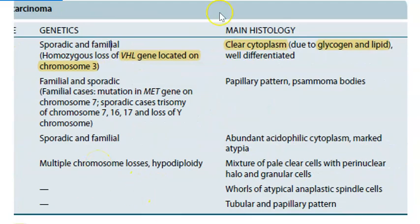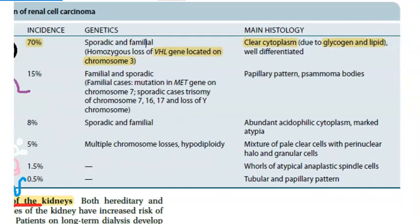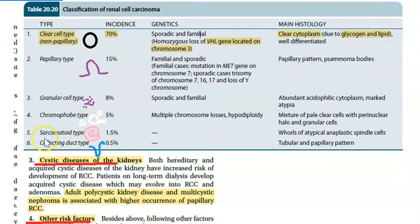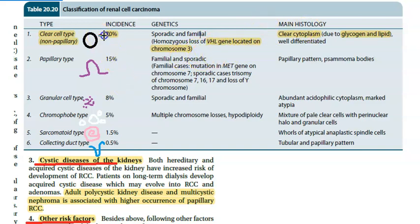In the sarcomatoid type there will be whorls of atypical anaplastic spindle cells. The clear cell type is most important - it has a connection to chromosome 3 and von Hippel-Lindau disease. Clear cell type has clear cytoplasm due to glycogen and lipids, and it is well differentiated.